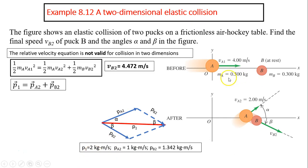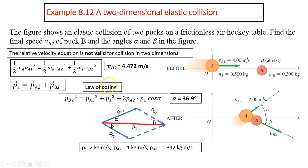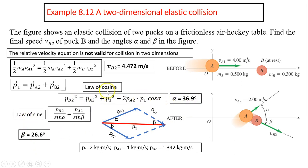We know P1 = 0.5 × 4 = 2, PA2 = 0.5 × 2 = 1, and PB2 = 0.3 × 4.472 = 1.342. Knowing all three sides of the triangle, we use the law of cosines: PB2² = PA2² + P1² − 2·PA2·P1·cos(α) to find α ≈ 36.9°. Then using the law of sines — opposite side over sin(α) = PA2 over sin(β) — we find β ≈ 26.6°.